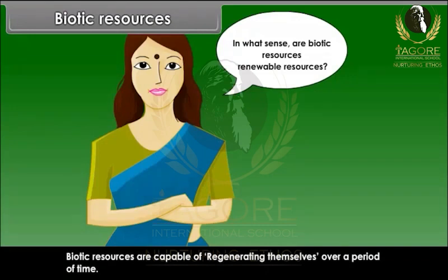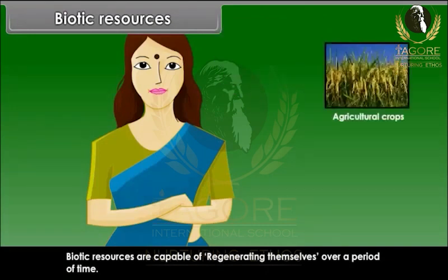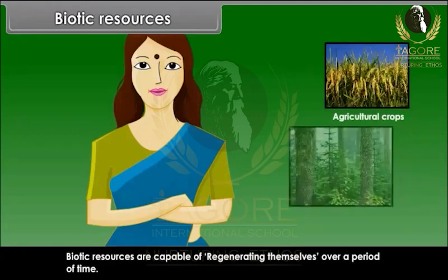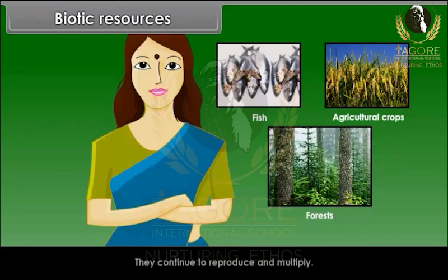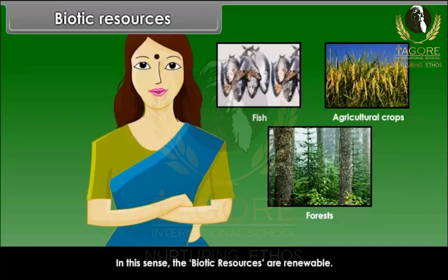Biotic resources are capable of regenerating themselves over a period of time. For example, agricultural crops, forests, fish, etc. They continue to reproduce and multiply. In this sense, the biotic resources are renewable.